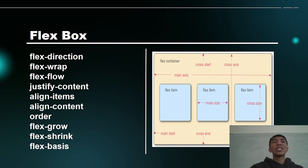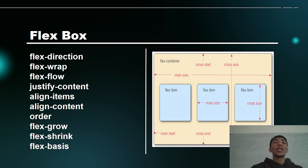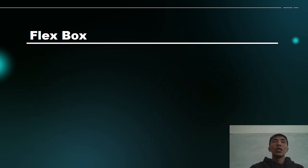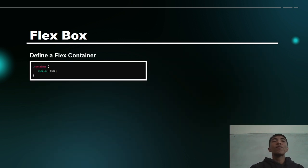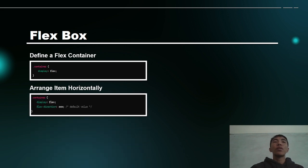Flexbox is very important to us. We have different kinds of properties under flexbox: flex-direction, flex-wrap, flex-flow, justify-content, align-items, align-content, order, flex-grow, flex-shrink, and flex-basis. These are the syntax tags we can add using flexbox.